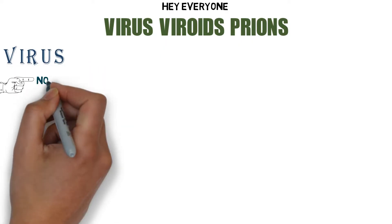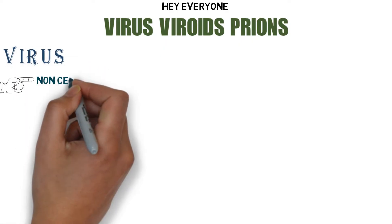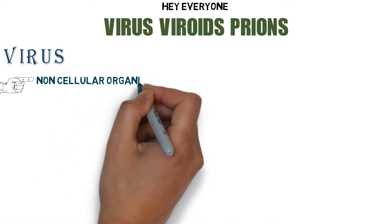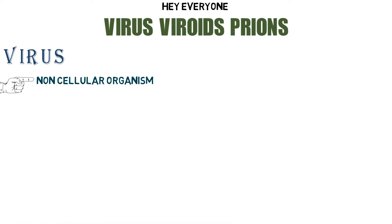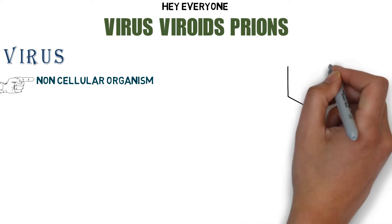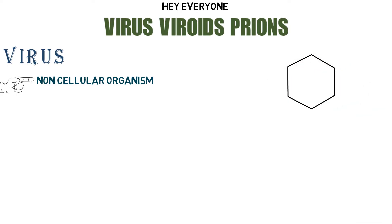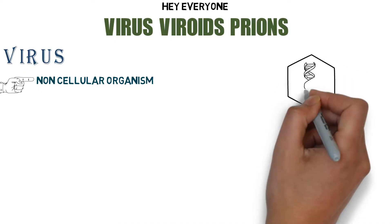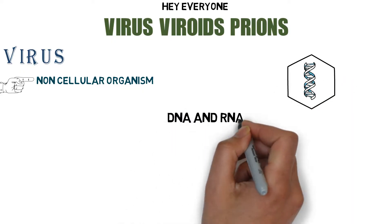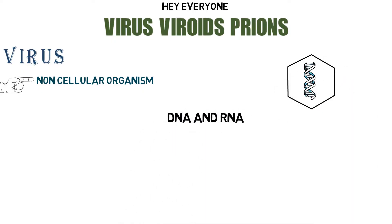The virus is a non-cellular organism, meaning there are no cells present in it — no cytoplasm, no nucleus. That's why it's called a non-cellular organism. What is present in it is only a protein coat and its genetic material, which is either DNA or RNA.